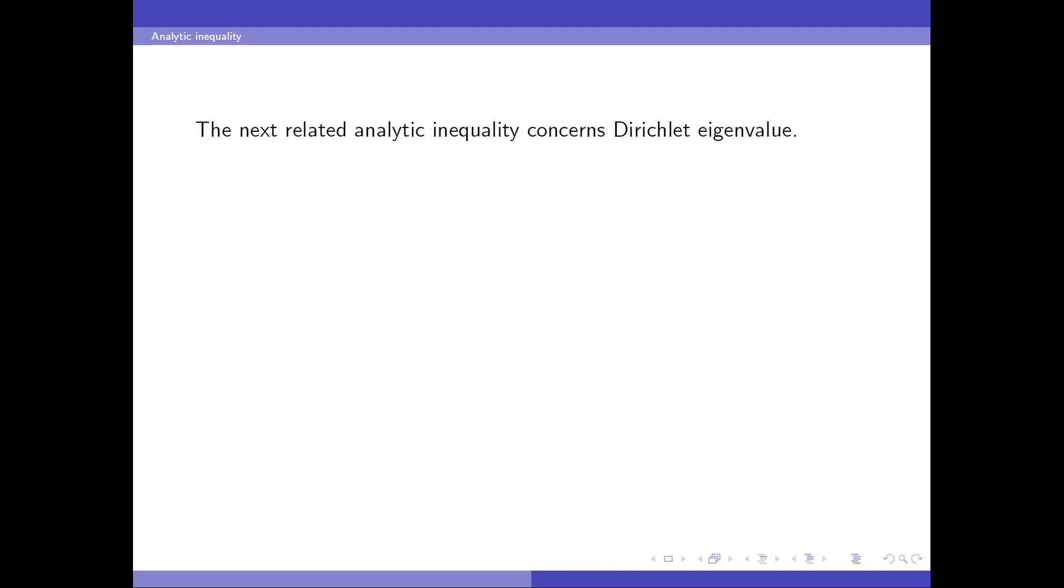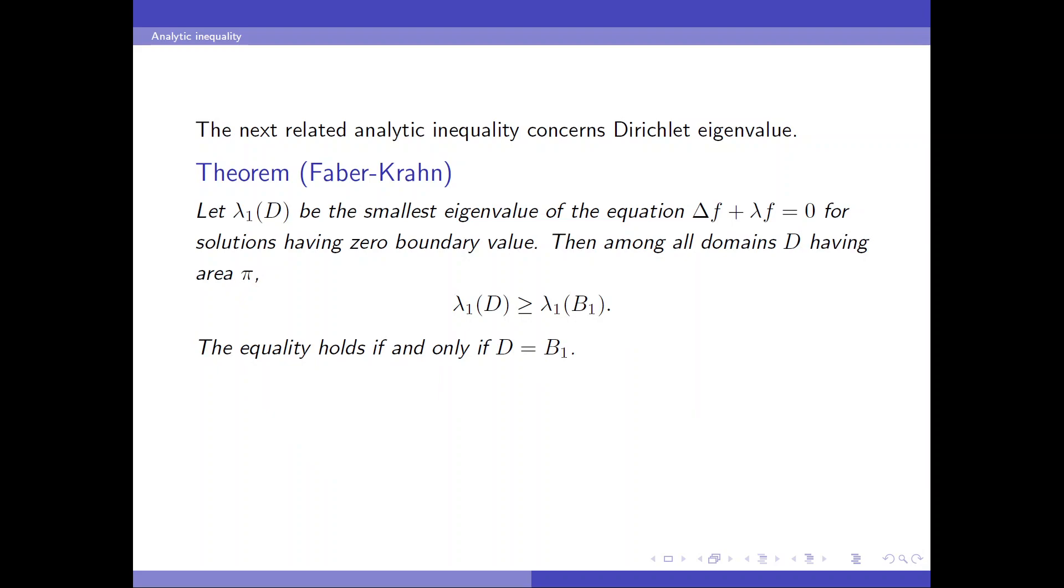The next related analytic inequality concerns the Dirichlet eigenvalue. And the result is due to Faber-Krahn. Let lambda 1 be the smallest eigenvalue of the equation Laplace f plus lambda f equals 0 for solutions having zero boundary value. Then lambda 1 of D is greater than that of the unit disc if D has area pi. And the equality holds if and only if D equals B(1).